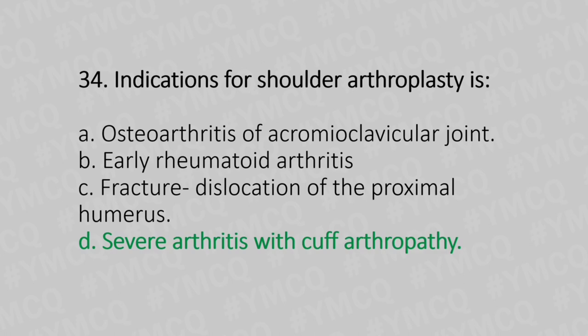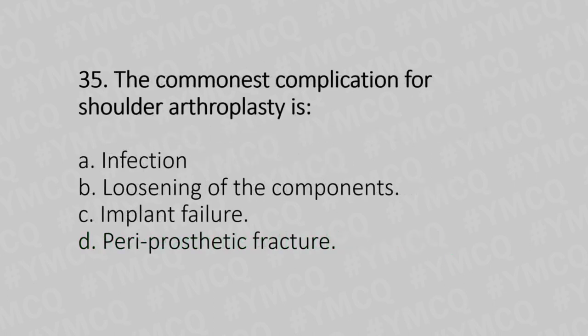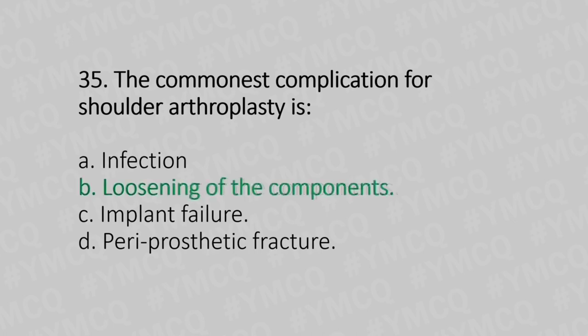Now let's move to question number 35. The commonest complication of shoulder arthroplasty is. Option A: infection. Option B: loosening of the components. Option C: implant failure. Option D: periprosthetic fracture. And the answer is Option B, loosening of the components.